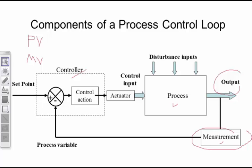The PV can also be an input to a data display, so the operator can use the reading to adjust the process through manual control and supervision. The variable which needs to be manipulated in order to have control over the process variable is called the manipulated variable or MV. If we control a specific flow, for instance, then we manipulate a valve to control the flow — the valve position is the manipulated variable and the flow becomes the process variable. In a simple automatic controller, the controller output signal OP drives the manipulated variable. In more complex systems, the controller output signal can drive the target or reference values for other controllers.